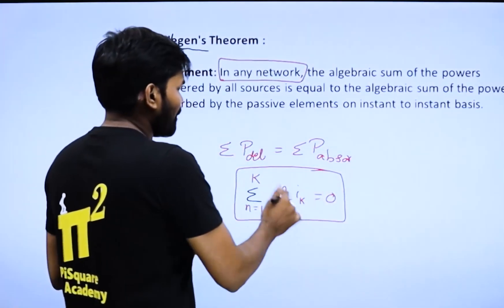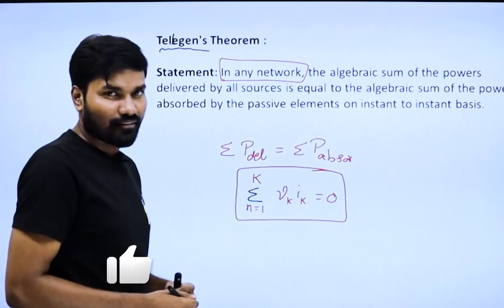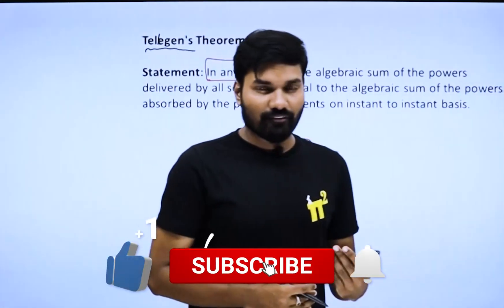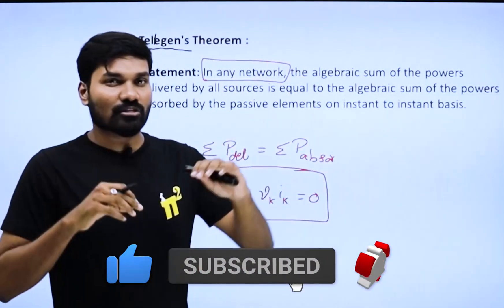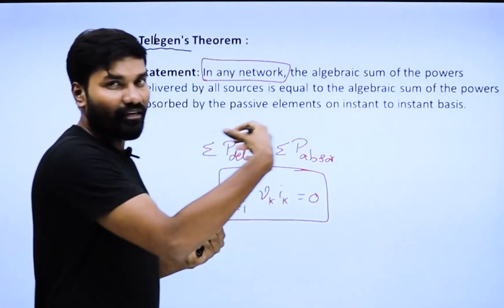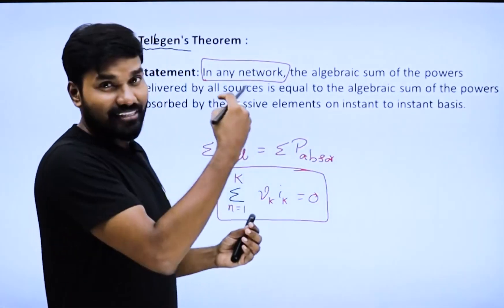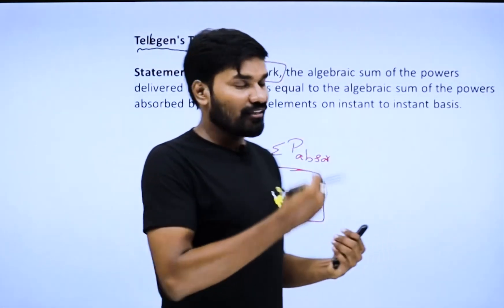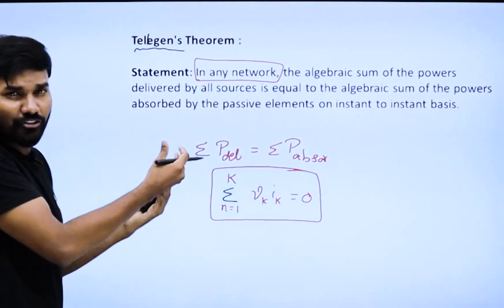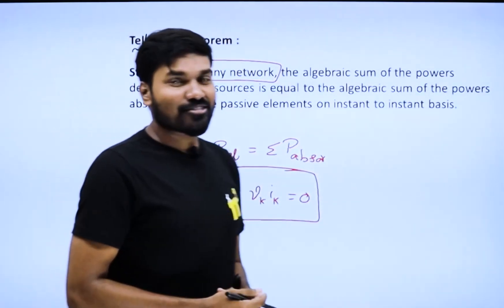I recommend you go with this approach the way you deal with KCL — when writing KCL, sum of incoming currents equals sum of outgoing currents. Similarly here, power delivered equals power absorbed within the circuit. Just as KCL is based on the law of conservation of charge, this is based on the law of conservation of power or energy. That's all about Tellegen's Theorem.